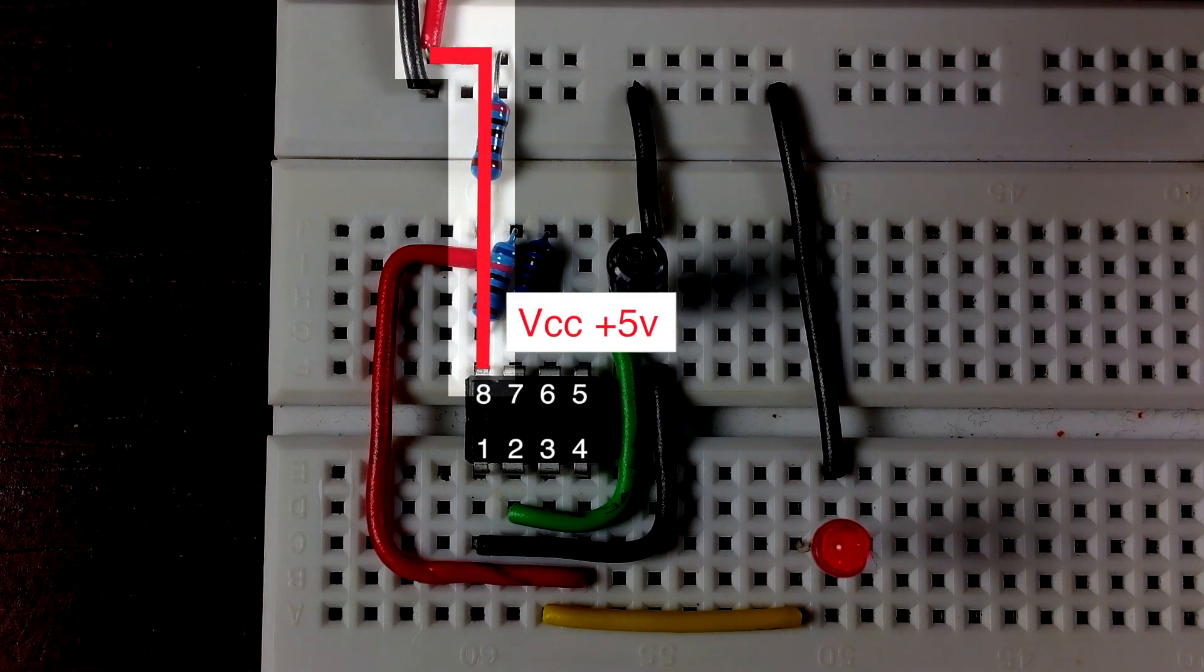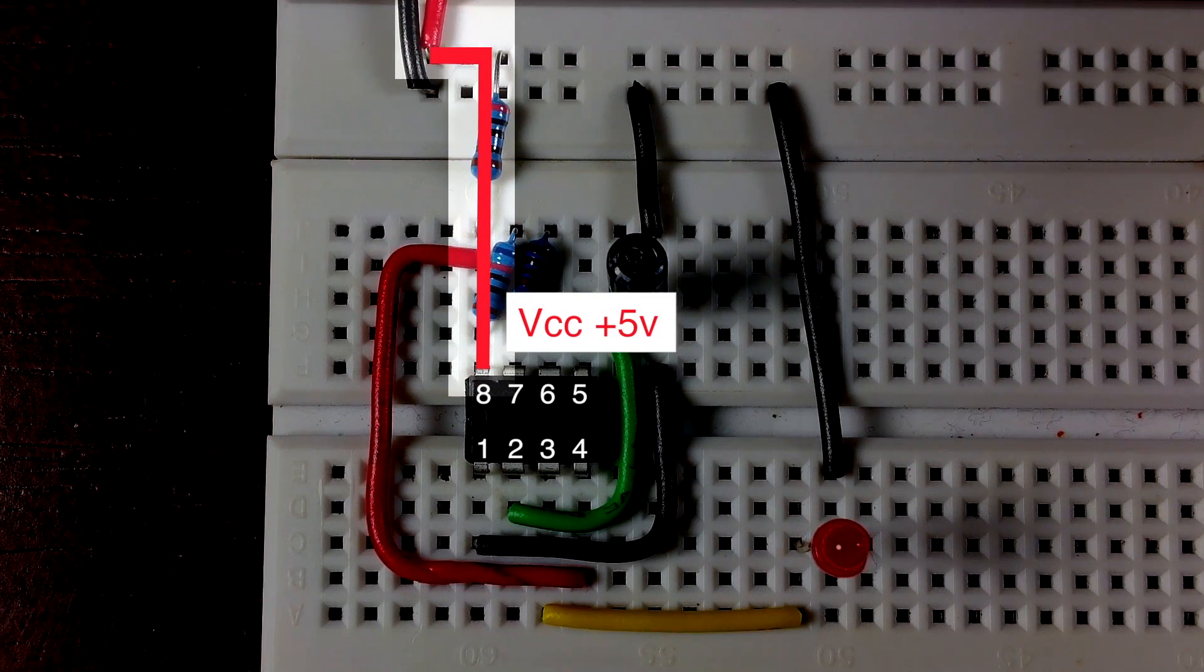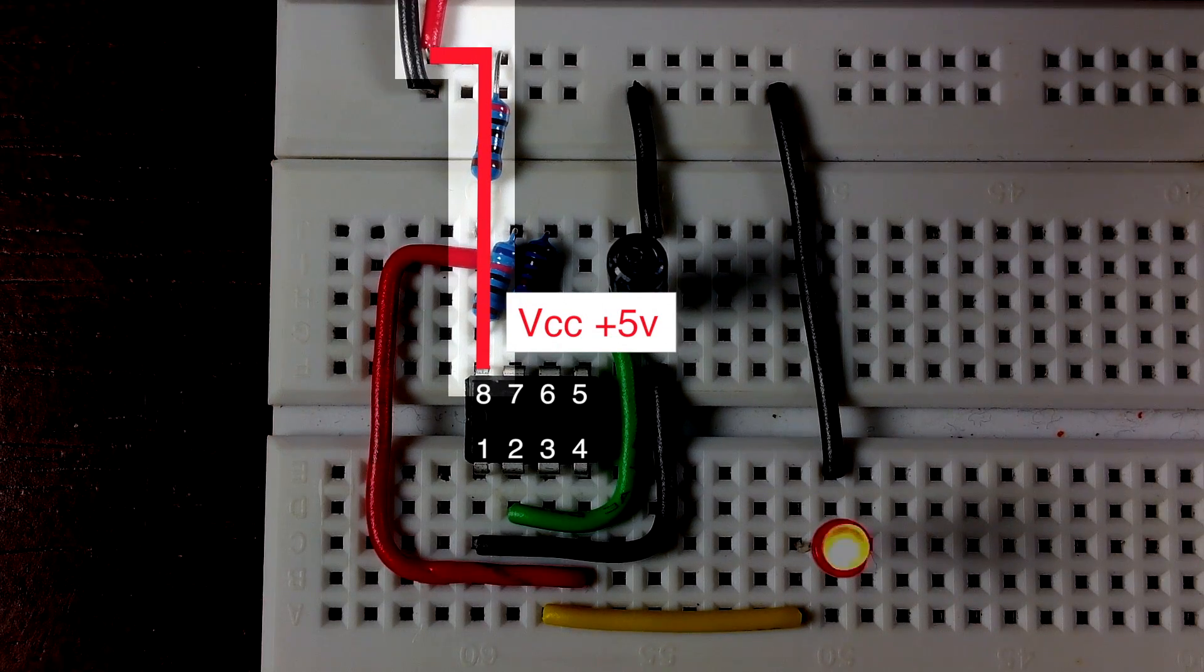I'm using a 5 volt power source on this one and running it through a 200 ohm resistor and then connecting that to pin 8 on the 555 timer. The resistor here is technically unnecessary and will cause the output frequency to be lower than calculated.